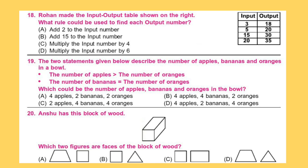Question 19. The two statements given below describe the number of apples, bananas and oranges in a bowl.